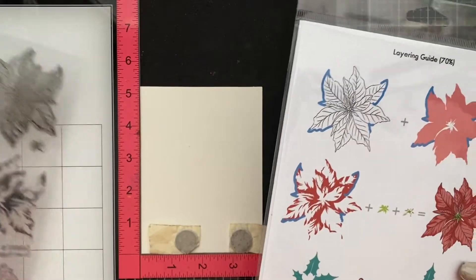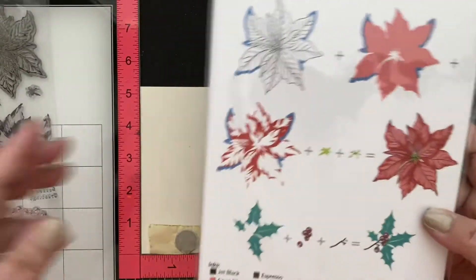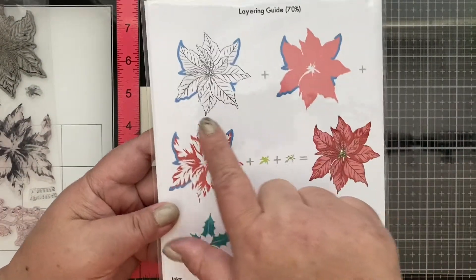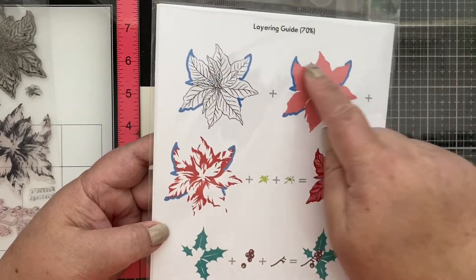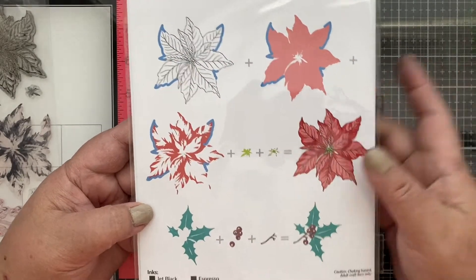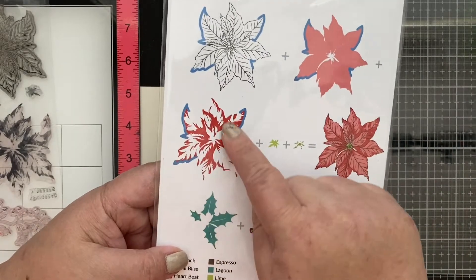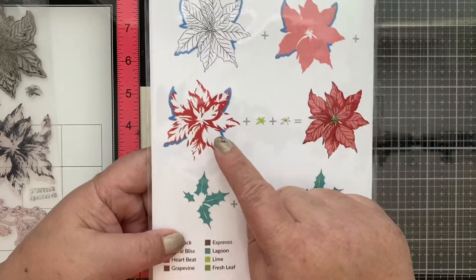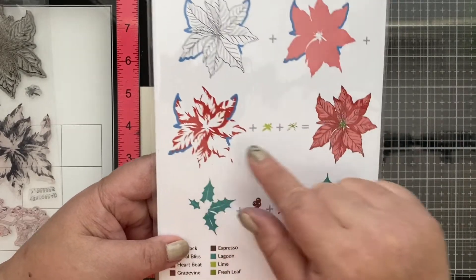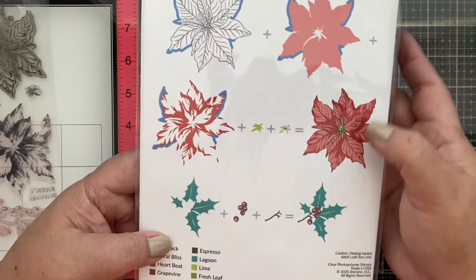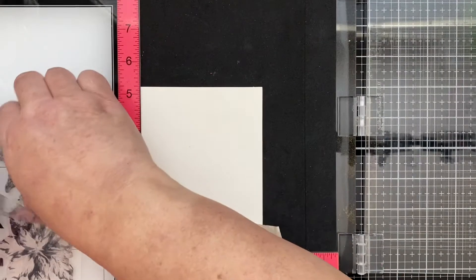For this Altenew winter florals, I have the stamps right here already ready to go and this is how it goes. If you start with the outline, then you start with the full color, then the layer here, the third layer, the highlights, then you have the stamens here to create the poinsettia.